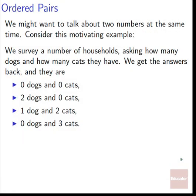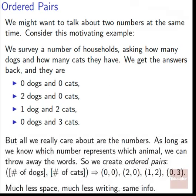What if we want to talk about more than one number at a time? Consider this motivating example: we survey households and ask how many dogs and how many cats each has. We get answers like zero dogs and zero cats, two dogs and zero cats, one dog and two cats, zero dogs and three cats. We can write them out in words, but that takes a lot of space. As long as we know which number represents which animal, we can throw away the words. So we just care about the numbers — it was zero and zero, or two and zero, and so on.